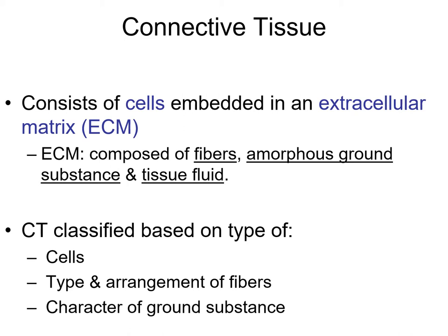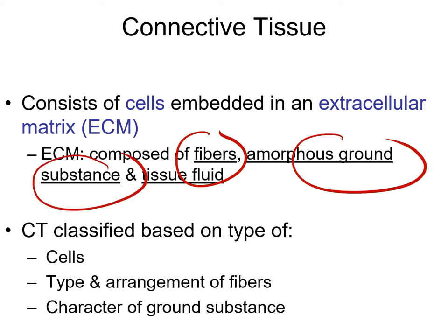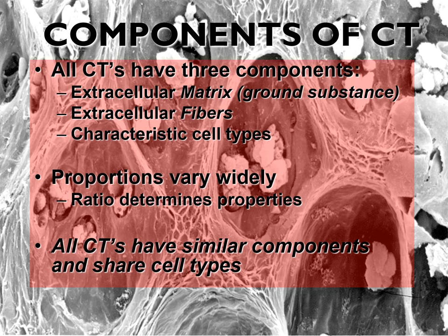By definition, connective tissue consists of cells embedded in an extracellular matrix. This extracellular matrix usually consists of fibers and also amorphous ground substance. So the connective tissue has three main components: cells, fibers, and ground substance. Usually the classification of the connective tissue depends on the type of cells that exist, the type and arrangement of the fibers, and the characteristics of the ground substance. Almost all connective tissues have the same components: the extracellular matrix, the fibers, and the cells.